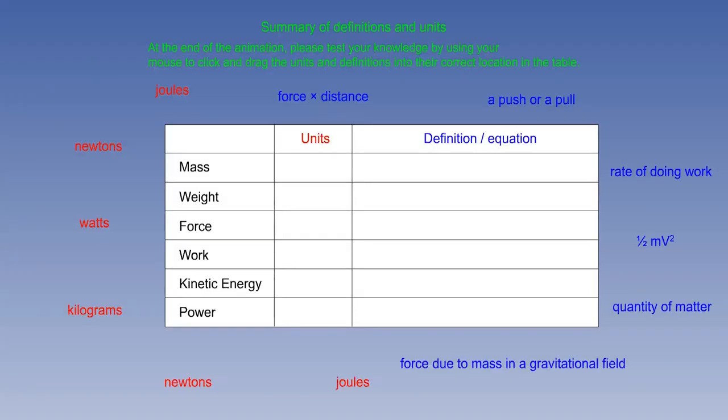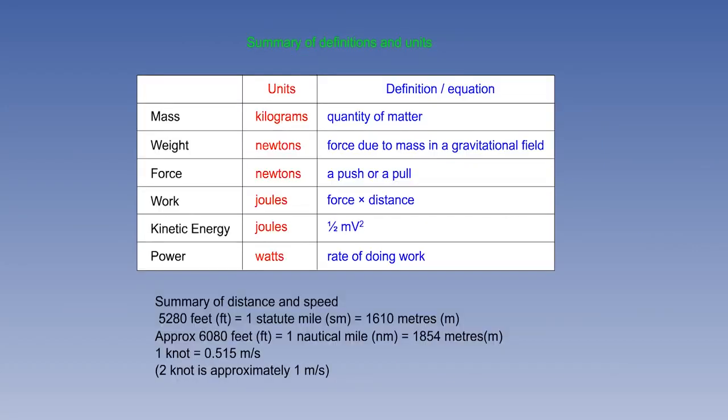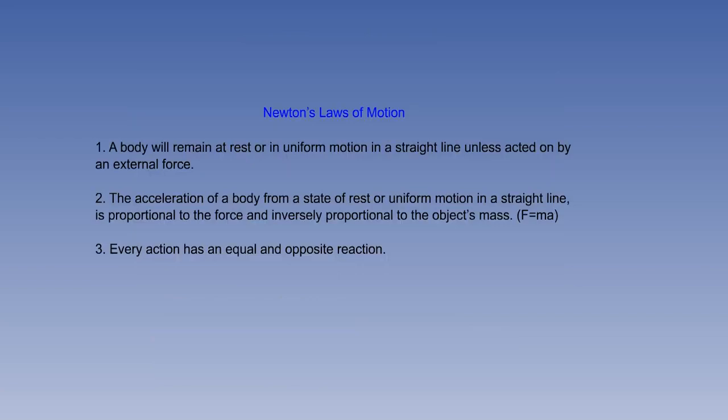In summary, this lesson has looked at the definitions and units that are needed in principles of flight, together with Newton's laws of motion. Look again at the distance and speed conversions. There are 5,280 feet in a statute mile, and 6,080 feet in one nautical mile. As an approximation, halve the knots to find metres per second. You are then introduced to Newton's three laws of motion.